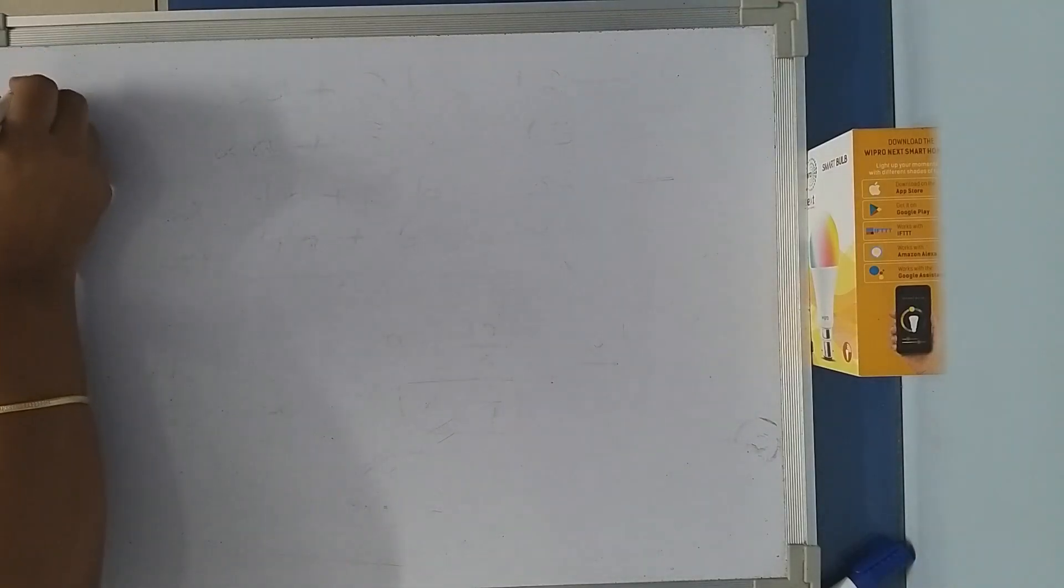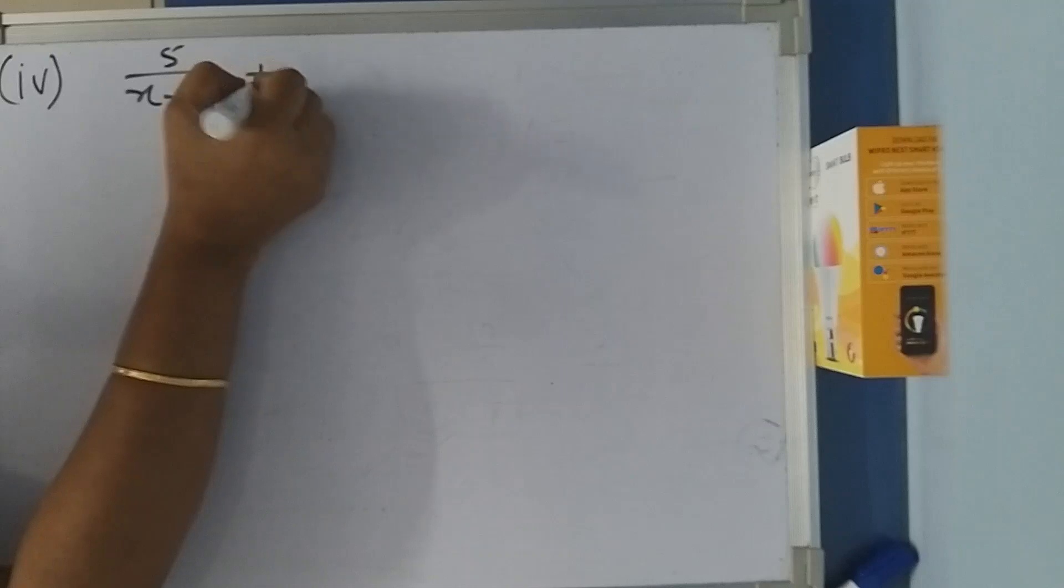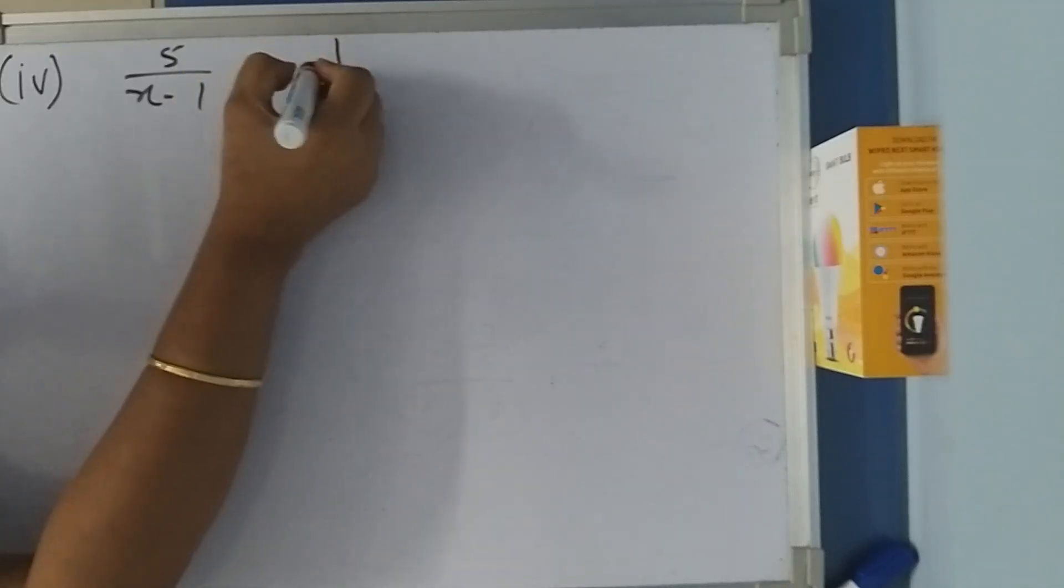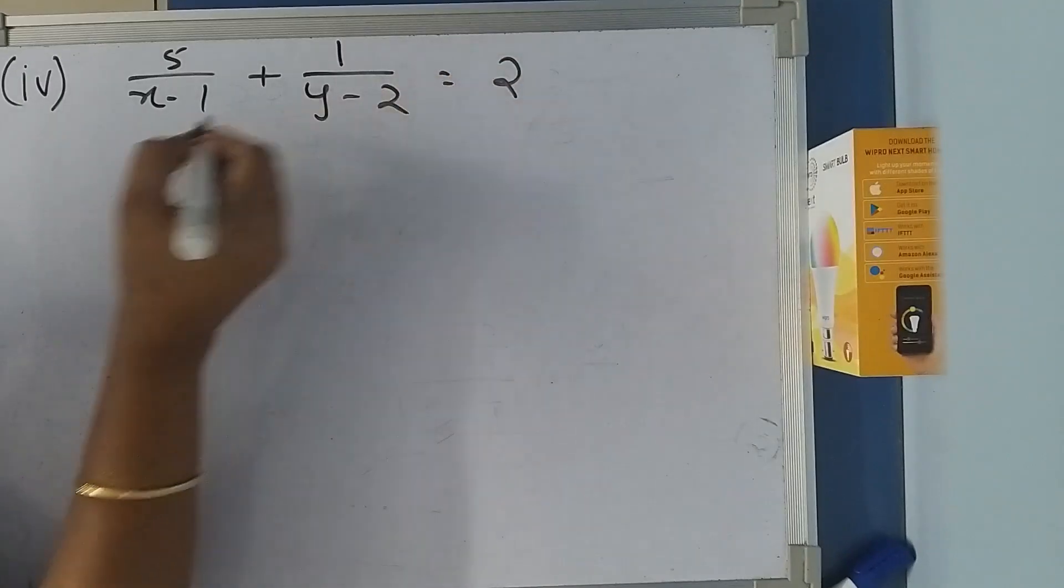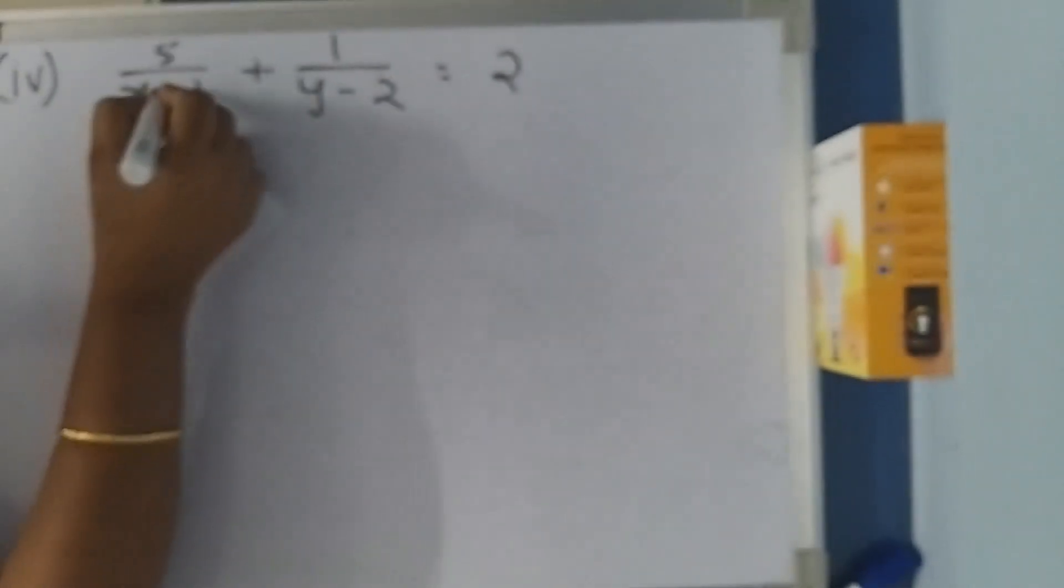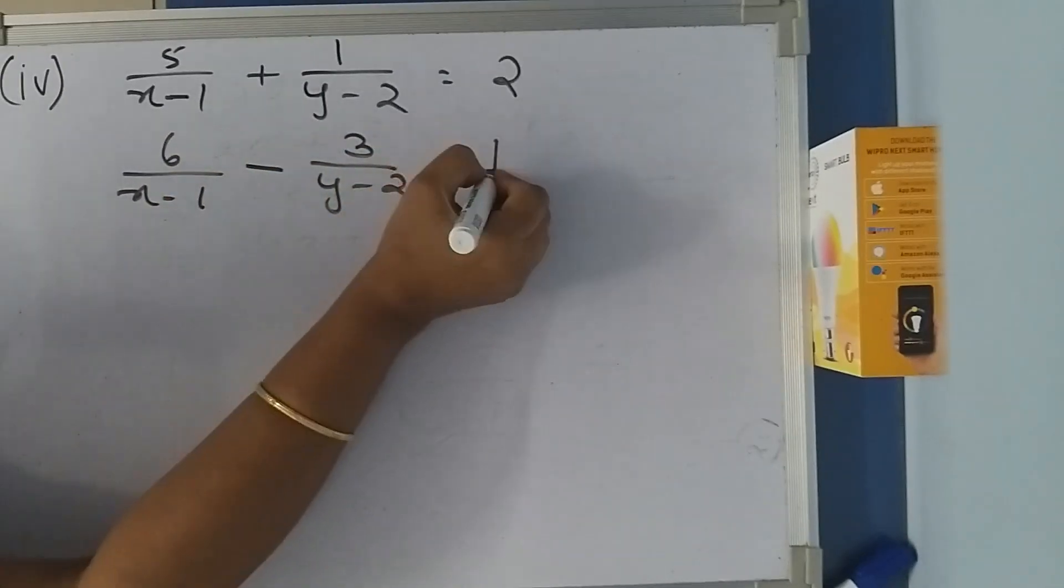Let's do the 4th question now. The question is 5/(x-1) + 1/(y-2) = 2, and 6/(x-1) - 3/(y-2) = 1.